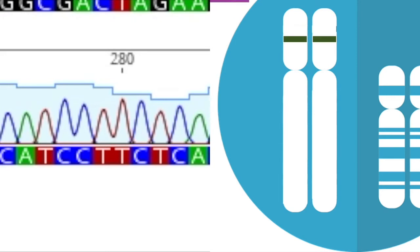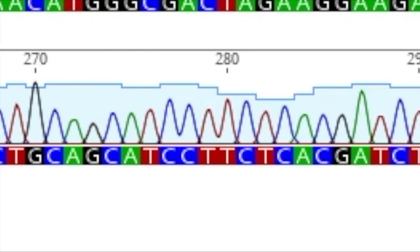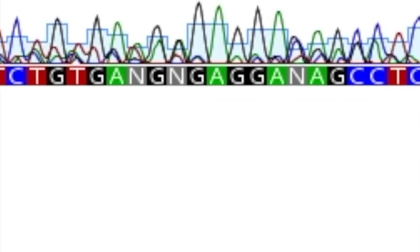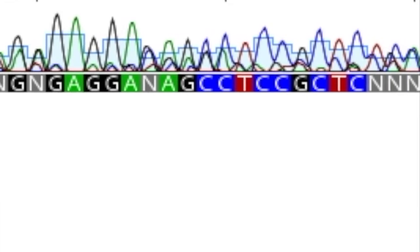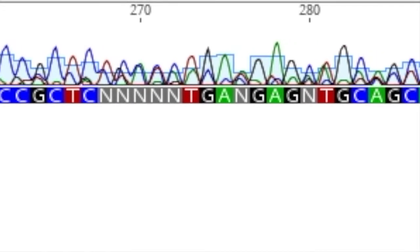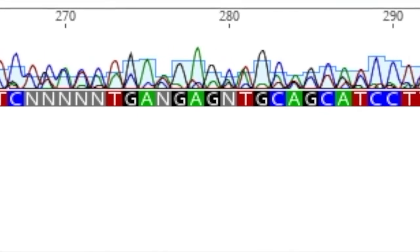So once you sequence these, you're going to have all the different sequences overlapping, and you won't really be able to get the details of that. But once again, just like in the T7E1 or Surveyor Nuclease Assay, it will be an indication that editing has occurred, and you can move on to step two.